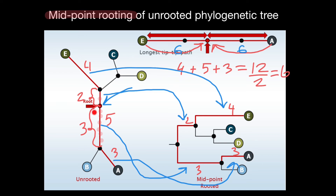But what if this branch is going to be very short — for example, just this short? In this case, we can easily miscalculate and put our midpoint somewhere off, and this is going to change the balance between all the taxa here. We can get a wrong picture.